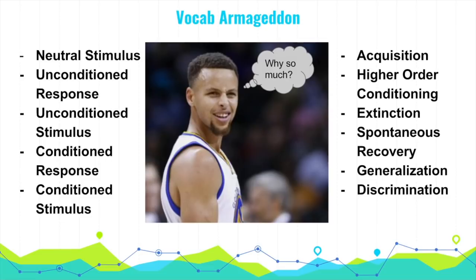Finally, there's generalization and discrimination. Generalization means that stimuli similar to a conditioned stimulus will produce similar results — a Pavlovian dog might salivate at a church bell, a doorbell, or similar sounds. Discrimination is the opposite: the ability to distinguish between a conditioned stimulus and other neutral stimuli. If Pavlov whistled and the dog didn't salivate, that dog is exhibiting discrimination.